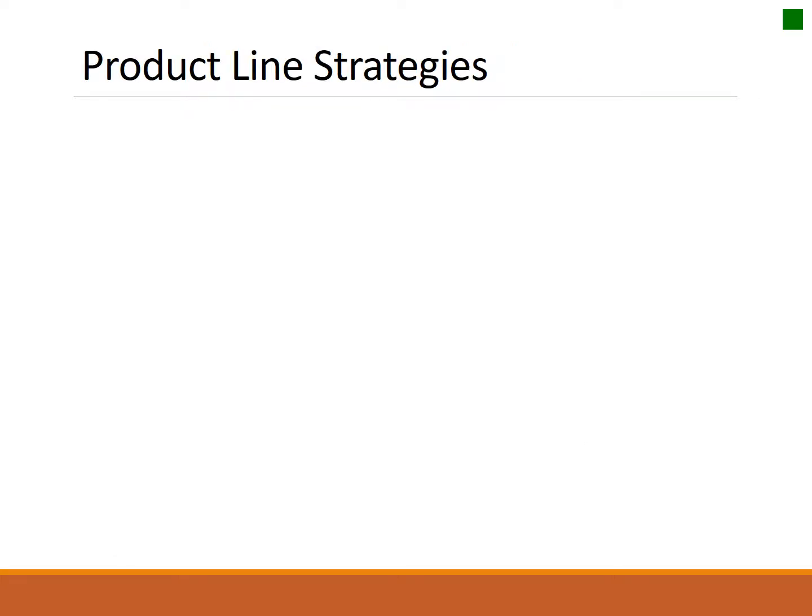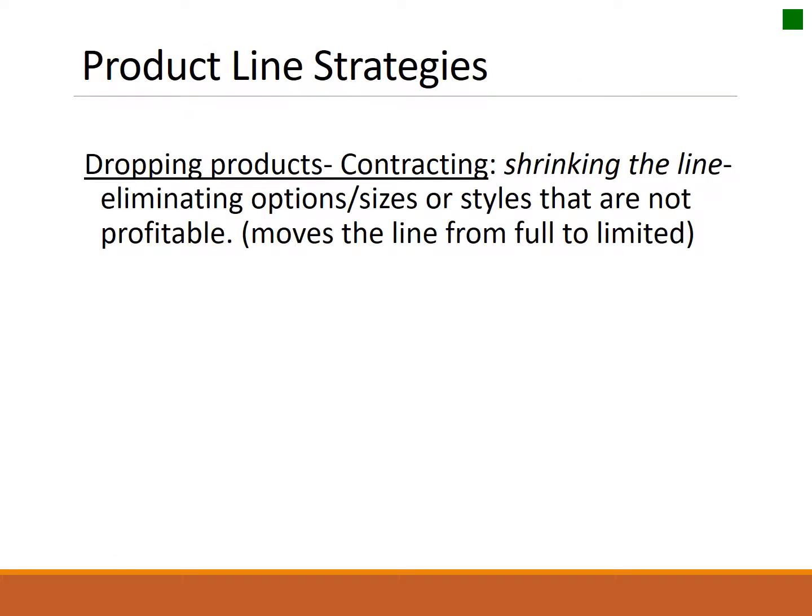The last product line strategy deals with deleting products. Sometimes you want to thin your product array, so you drop products that are unprofitable or consuming too many resources. If you're going from a full line back down to a limited line, you delete products — you contract. That's one more strategy to think about when looking at product lines.